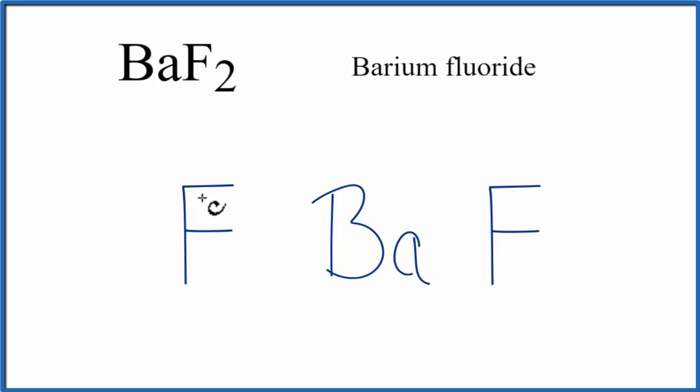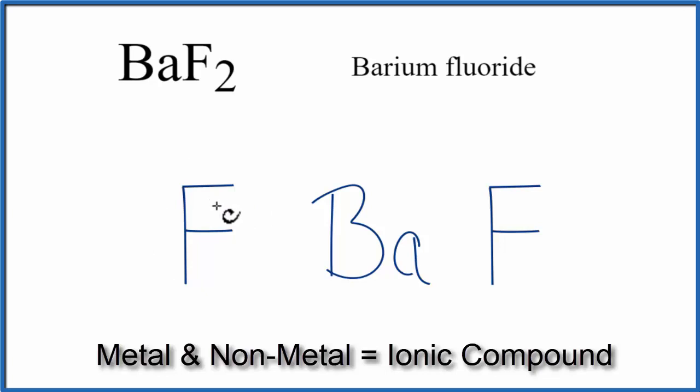Barium, that's a metal, and then fluorine, that's a nonmetal. So we have a metal bonded to a nonmetal, that's an ionic compound.